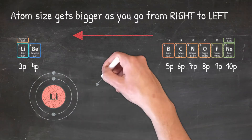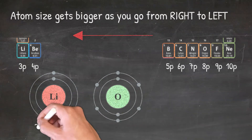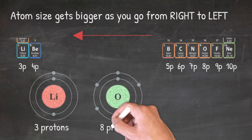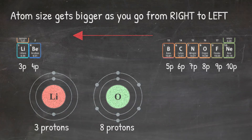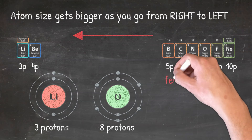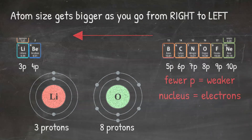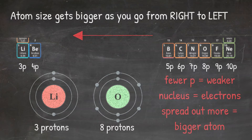If we compare lithium to oxygen, lithium will be larger. They both have two energy levels, but lithium has three protons while oxygen has eight. Lithium's nucleus is weaker, so the electrons are able to spread out more, while oxygen can pull its electrons in closer because it has a stronger nucleus. So the reason why atoms get bigger as you move from right to left is because the number of protons is going down, which makes the nucleus weaker, which allows the electrons to spread out more.